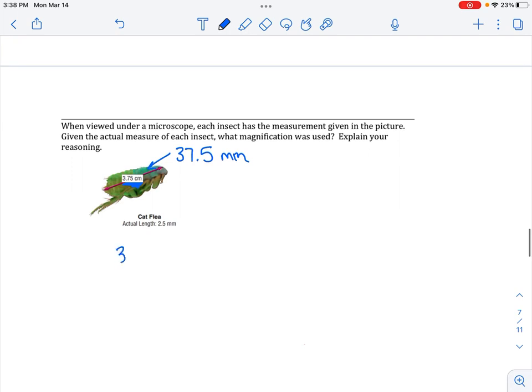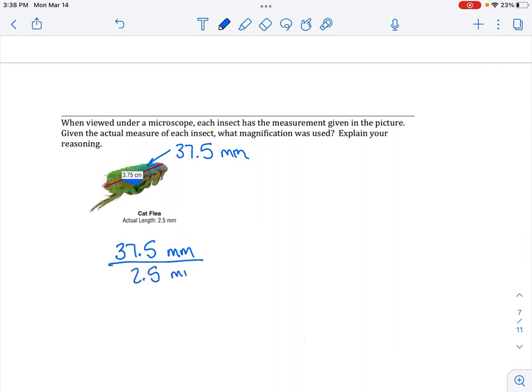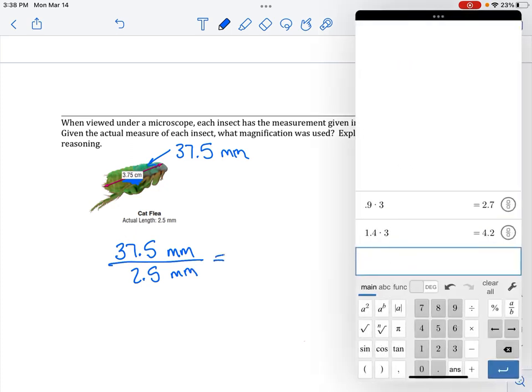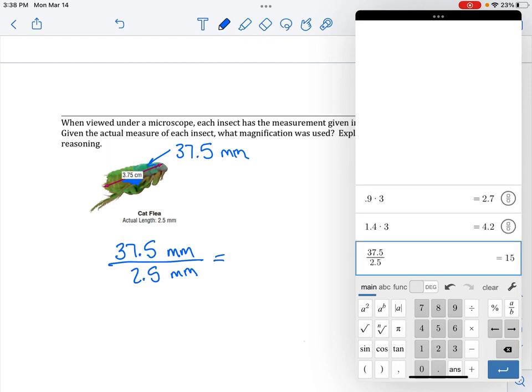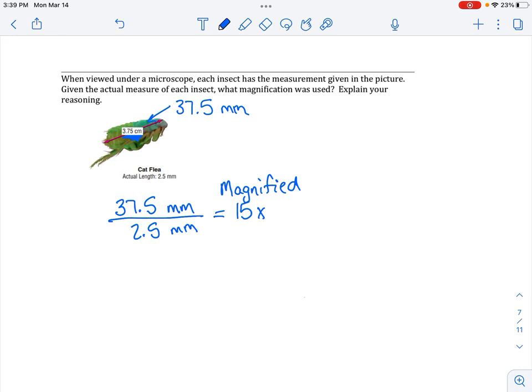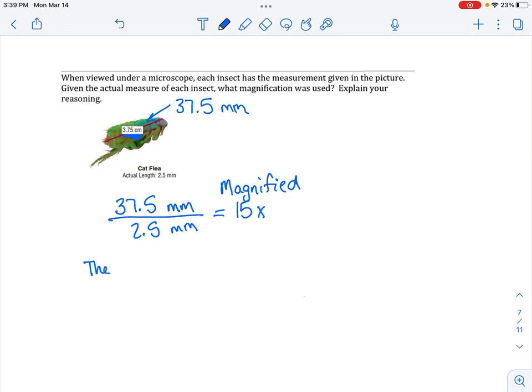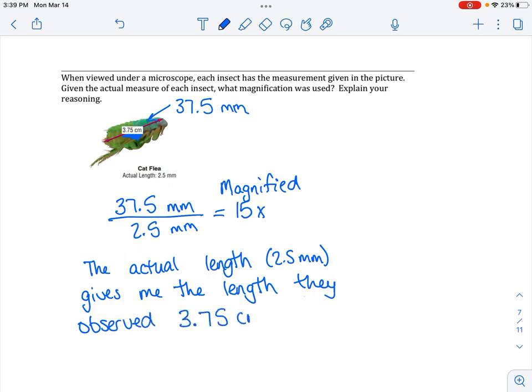Well, the first thing I'm going to do is I'm going to switch this to 37.5 millimeters. So then that way, I can just go ahead and divide my magnified version over my actual, and that will give me how much has been magnified. So it was magnified 15 times, and it does say to explain, and I would just say that the actual length times 15 gives me the length they observed.